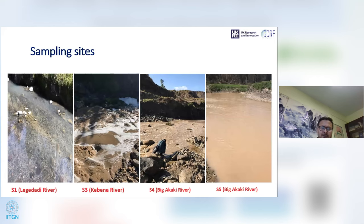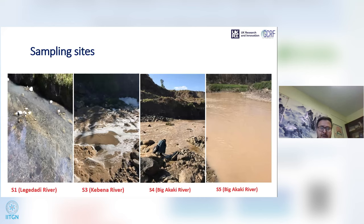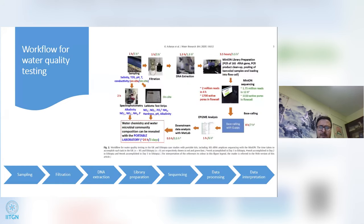These are pictures taken at the point of sampling. As you can see in the second picture, there are foams floating on the surface — this must be due to chemical contamination from industrial discharges, as this river flows through the central part of the city.